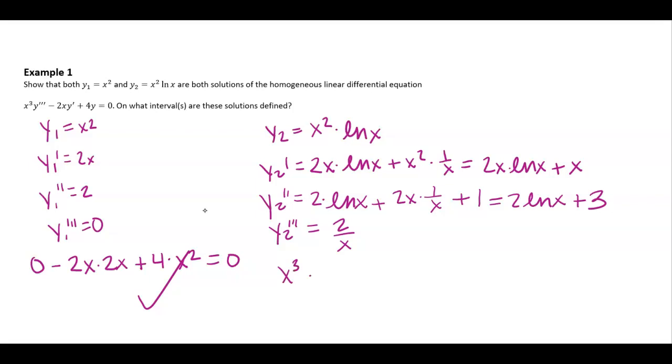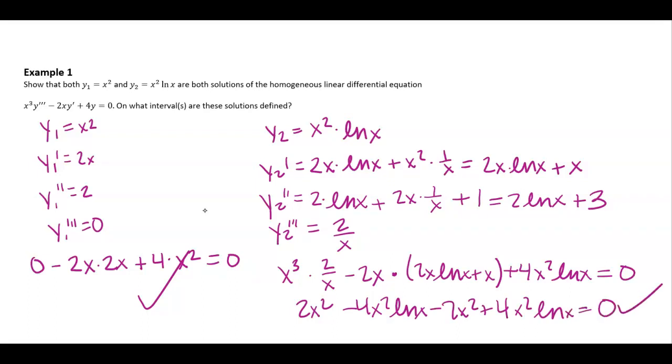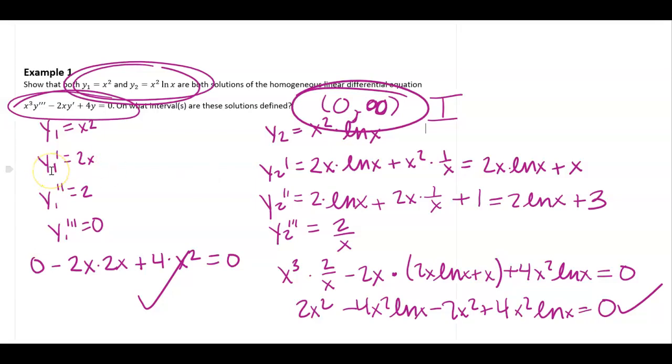Let's plug that in. So I would have x cubed times two over x minus two x times y prime plus four y. And I want to make sure that that is equal to zero. Right here, I'm going to get two x squared. Here, I'm going to have minus four x squared natural log of x minus two x squared. And these all zero out. So I am good. Now, on the intervals, I have to have continuity here. But I also have to have continuity here. So I'm only going to say that from zero to infinity is my interval that I'm looking at because of that natural log piece.